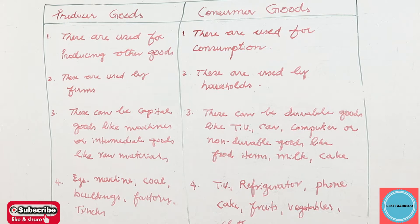Third point: producer goods can be capital goods — like machines, building structures, trucks — or intermediate goods like raw materials. For example, if a firm produces a shirt, you need cloth; that is your intermediate good, the raw material for it. And machines, of course, they need as well.